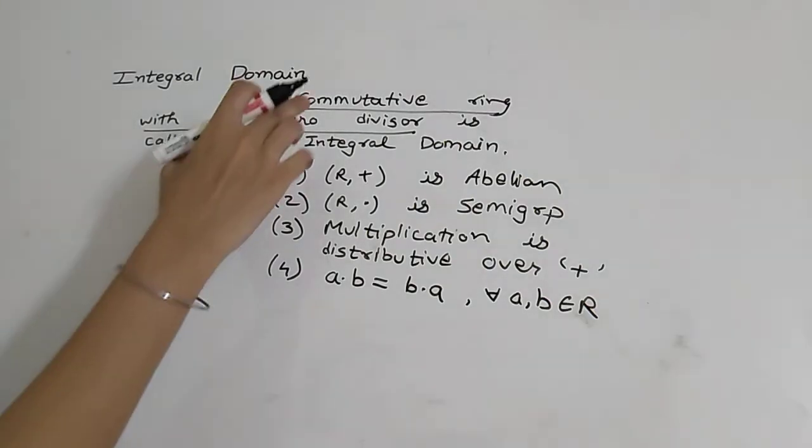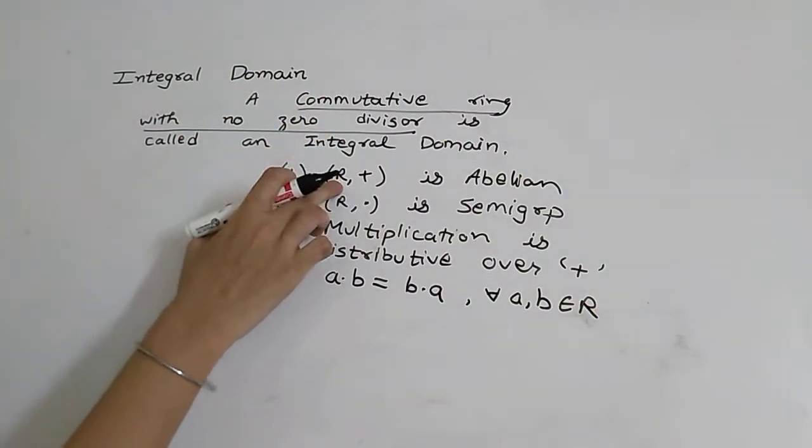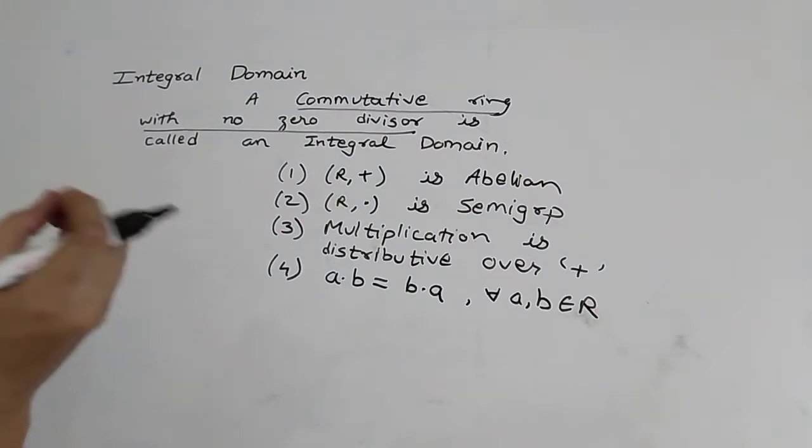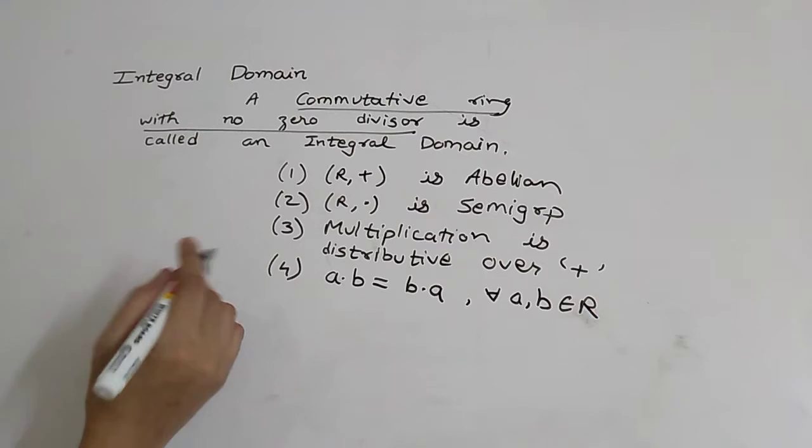When we satisfy these four properties, then we can say that R is a commutative ring with no zero divisor. And with no zero divisor, we have seen in previous videos what happens. A ring with no zero divisor, a ring without zero divisor means...